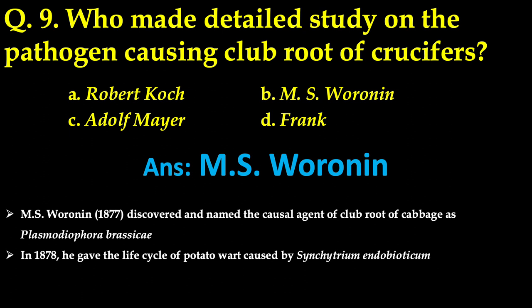Who made a detailed study on the pathogen causing club root of crucifers? There were four scientist names as options, and the correct answer is M.S. Woronin. Woronin in 1877 for the first time discovered and named the causal agent of club root of cabbage as Plasmodiophora brassicae. During 1878, he gave the life cycle of potato wart caused by Synchytrium endobioticum — another contribution of Woronin.